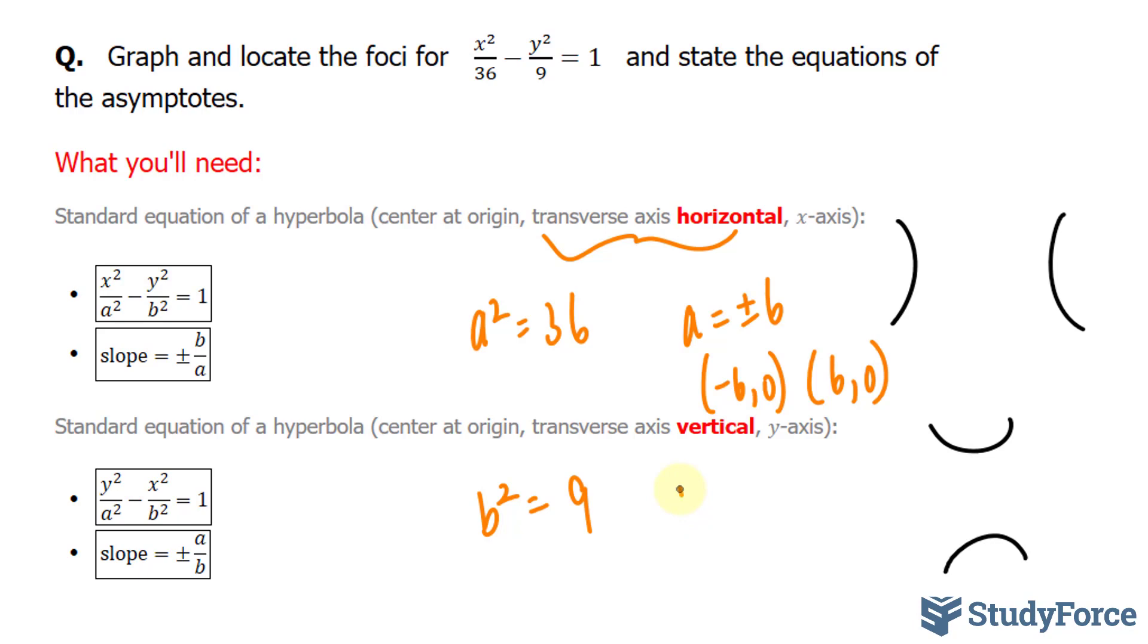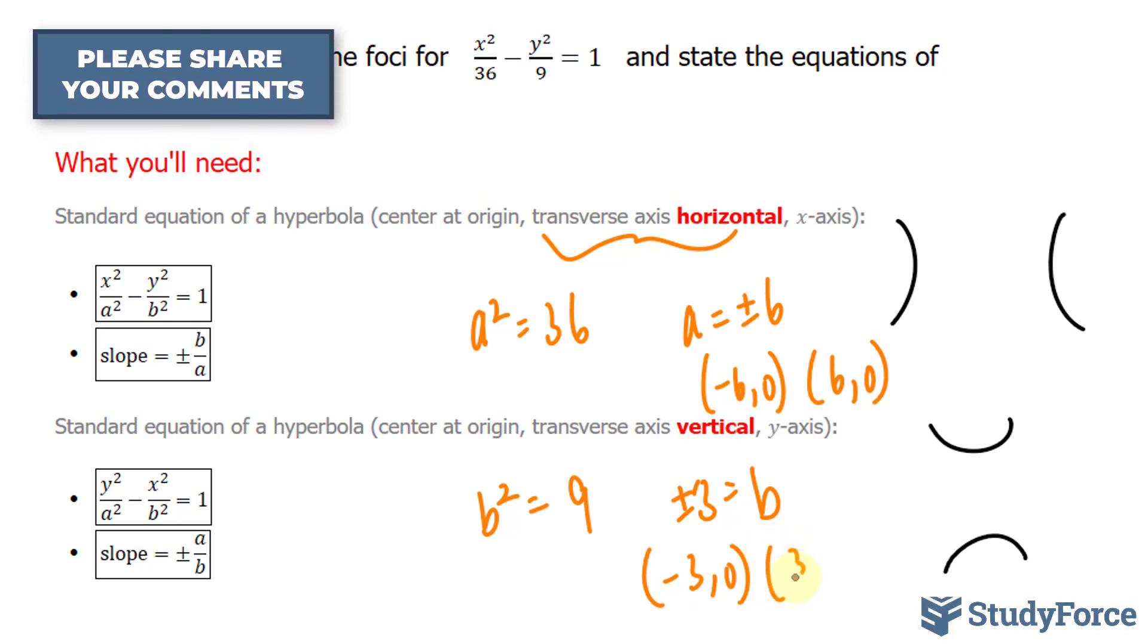And what these will represent are the conjugate axes. So we'll have a conjugate axis at negative 3 and 0 and one at positive 3 and 0.